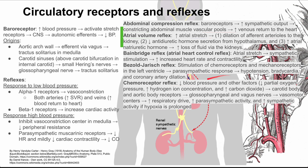The chemoreceptor reflex is a response to low blood pressure and many other factors — low partial oxygen pressure, increased hydrogen ion concentration, and increased carbon dioxide. These hit receptors in the carotid body and aortic body that go through the glossopharyngeal and vagus nerves through the vasomotor centers, responding by increasing your respiratory drive, increasing parasympathetic activity, and increasing sympathetic activity if hypoxia is prolonged. As you stop breathing and don't ventilate well, hydrogen ions go up, pH goes down, and carbon dioxide accumulates — which is why the response is to increase respiratory drive and sympathetic activity.